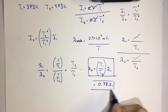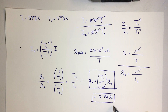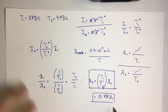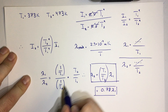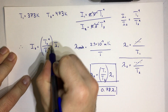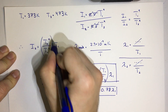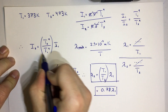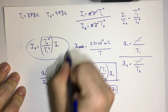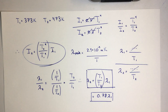We should expect that the new wavelength will be shorter because the temperature has increased. Similarly for the intensity, we find that intensity should increase for an increase in temperature, and that is exactly what we find.